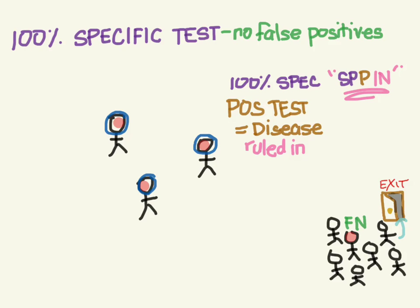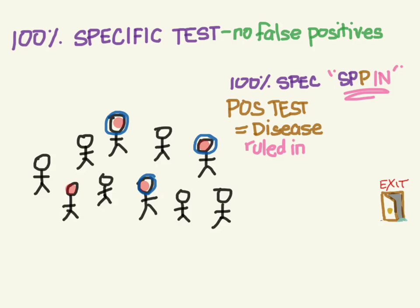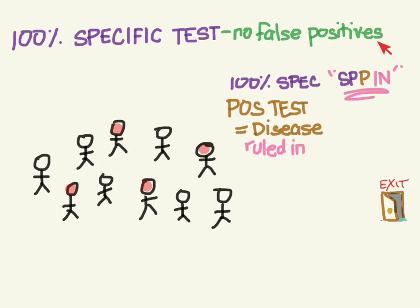Now let's look at the limitations of specificity. We already said this would be a 100% specific test — but so would a test that is never positive. It's impossible to have a false positive if it's never positive, so it's 100% specific. But this test is useless, because it doesn't distinguish anything for us.